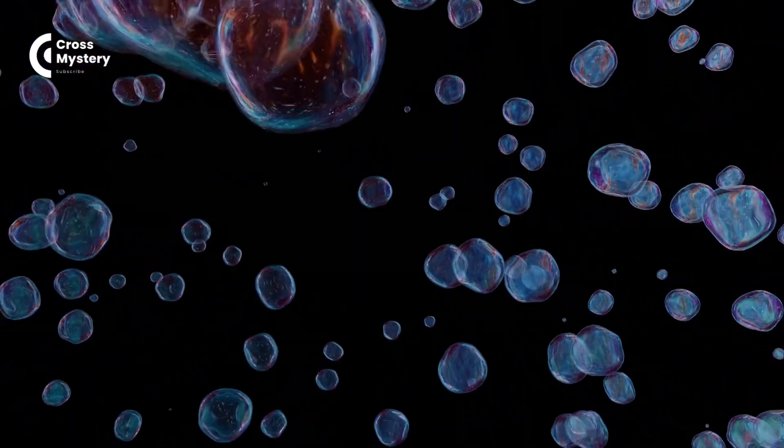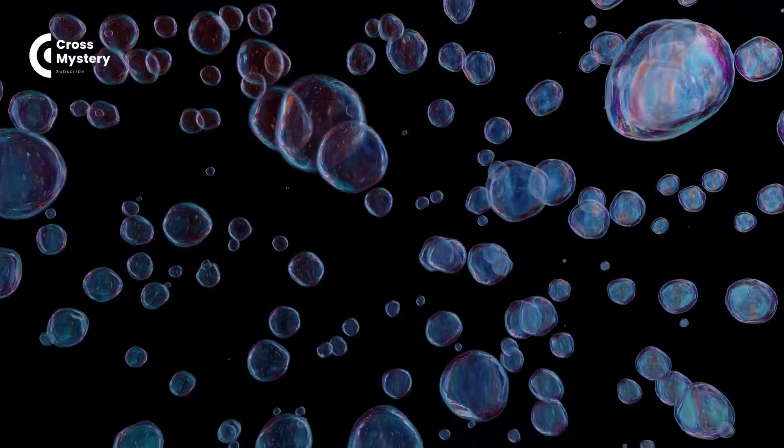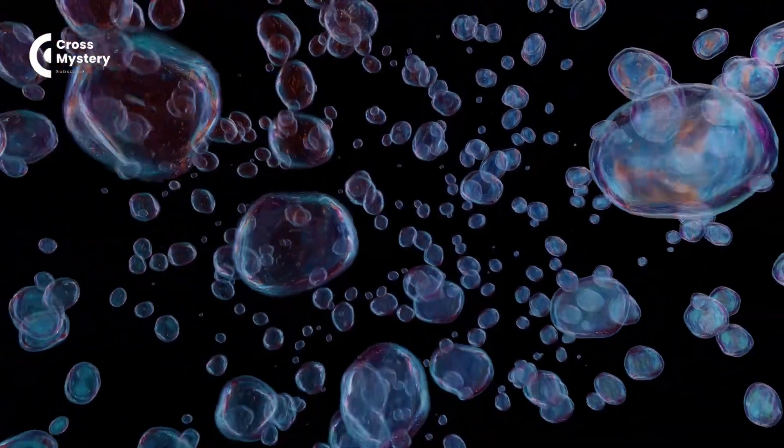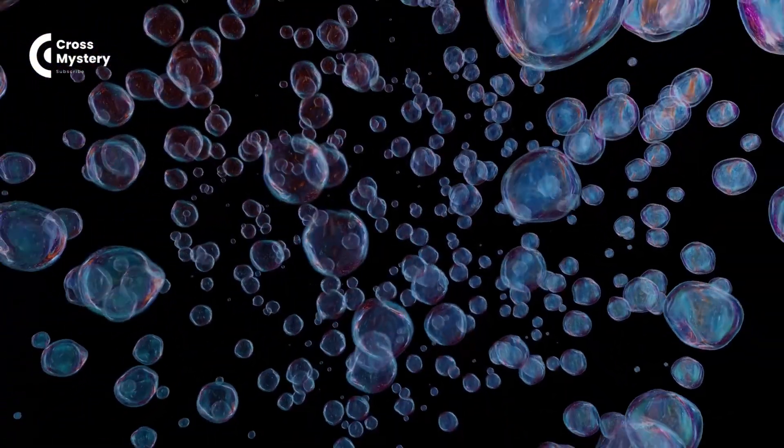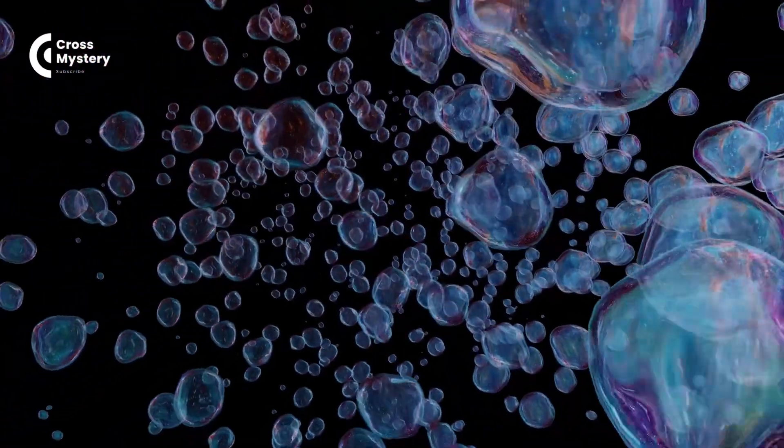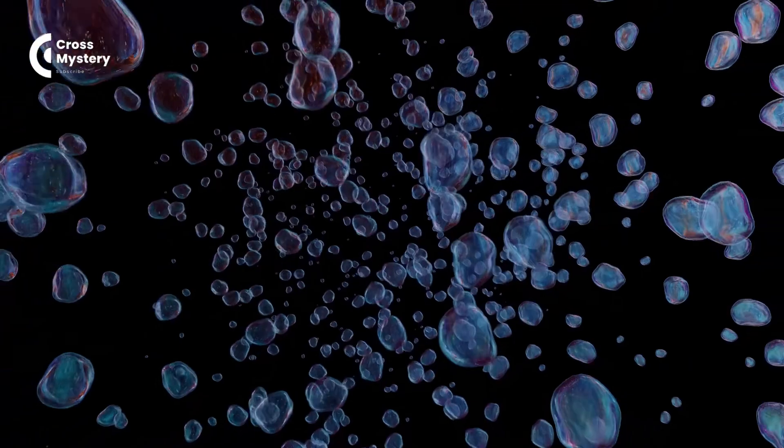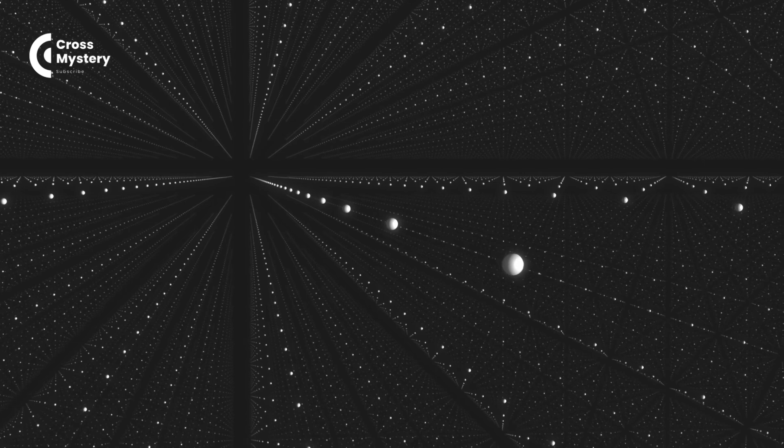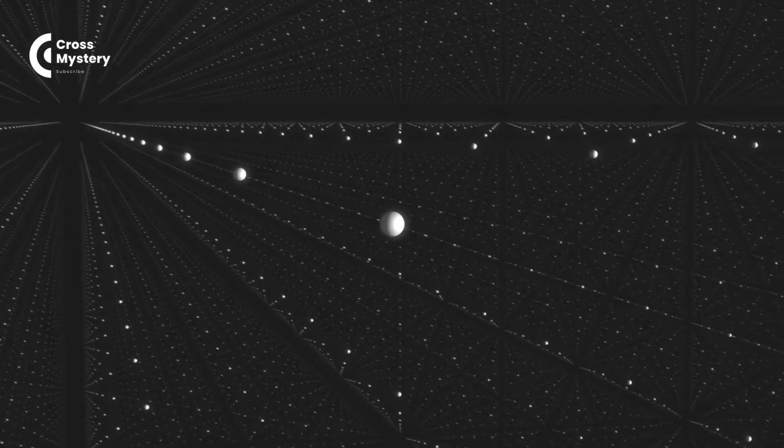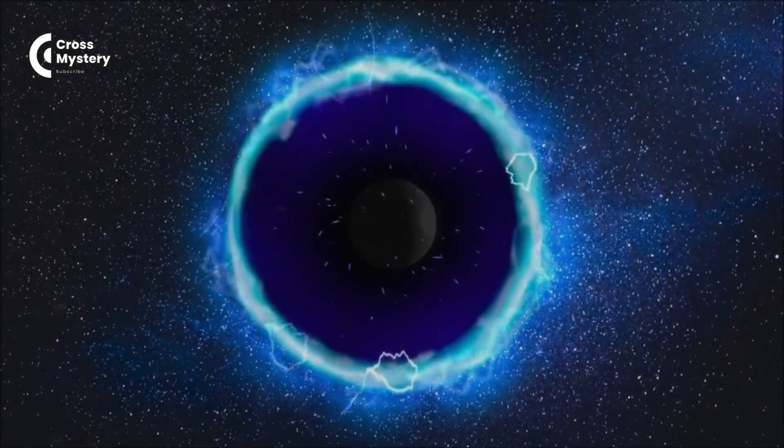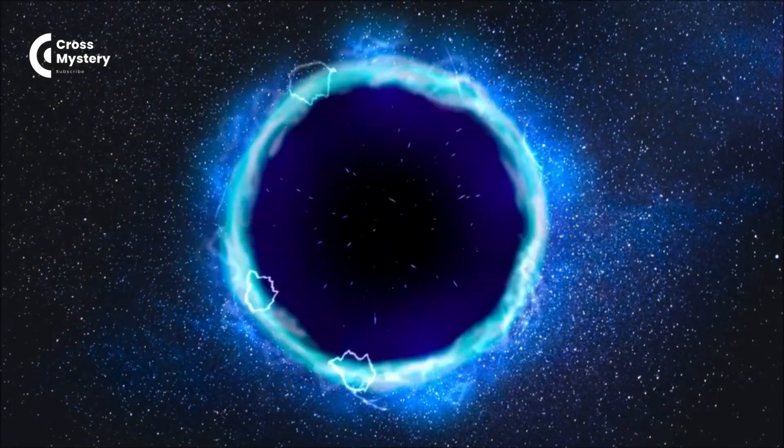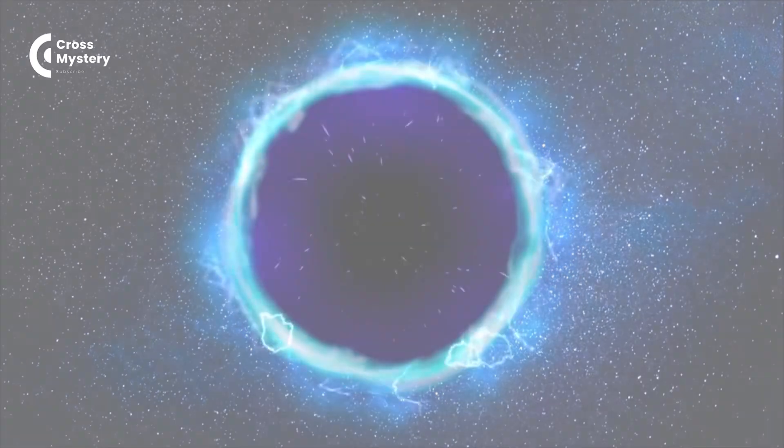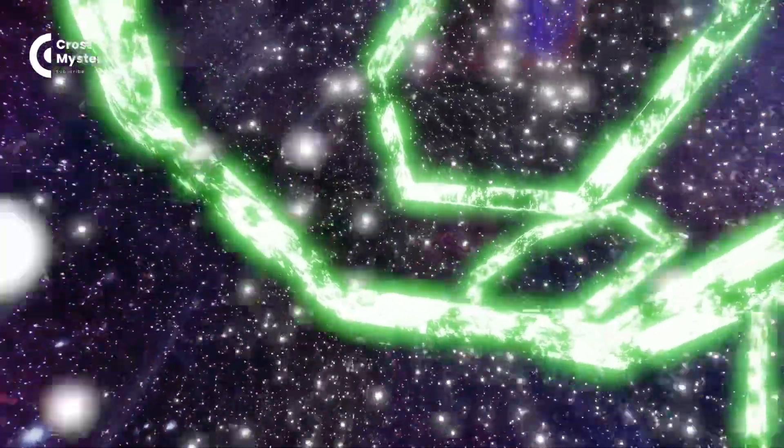But what if there are more dimensions lurking out there just beyond our grasp? This is not a flight of fancy. Several groundbreaking theories in high-level physics, including the intriguing string theory and M-theory, propose that our universe could be teeming with as many as 10 or 11 dimensions. These theories hint that, much like the Flatlanders wrestling to understand us, we might be wrestling to understand the universe's full potential due to our limited perception. These concealed dimensions, if they truly exist, are shrouded from us, rolled up so tightly that they are almost undetectable. But just because we are blind to them, doesn't mean they don't exist or that they don't impact our universe in profound, unimaginable ways.